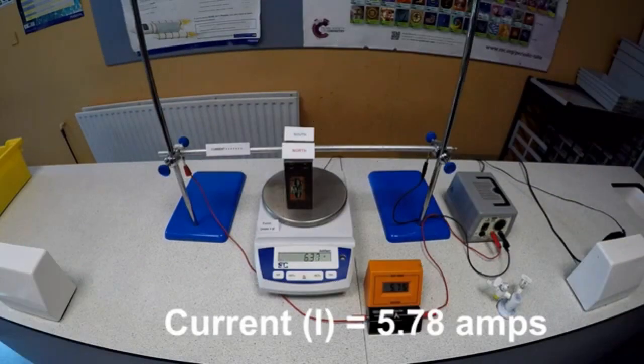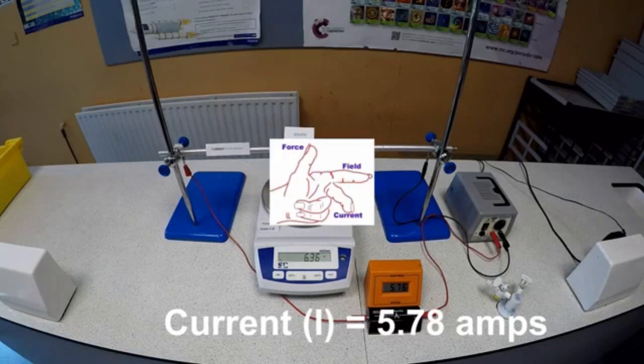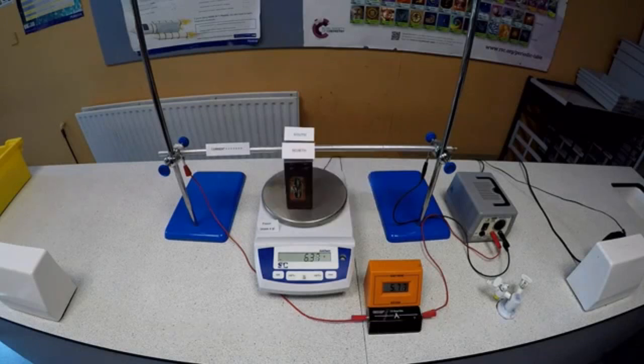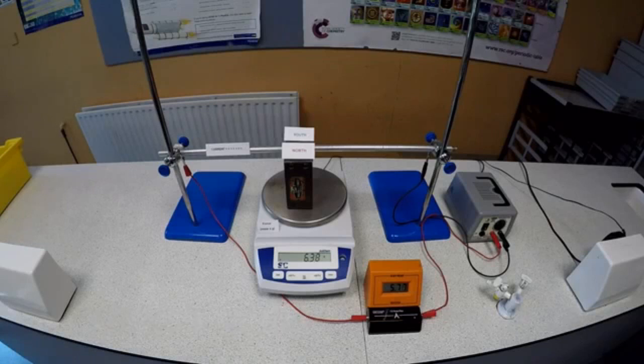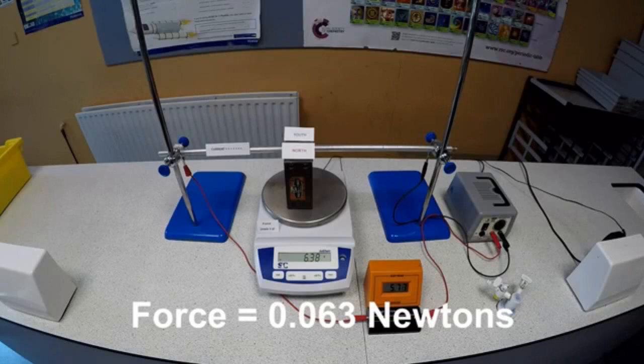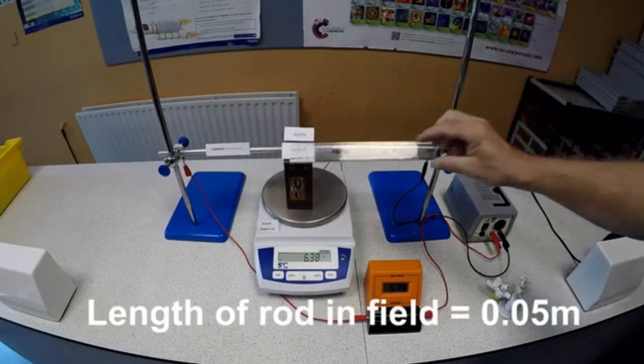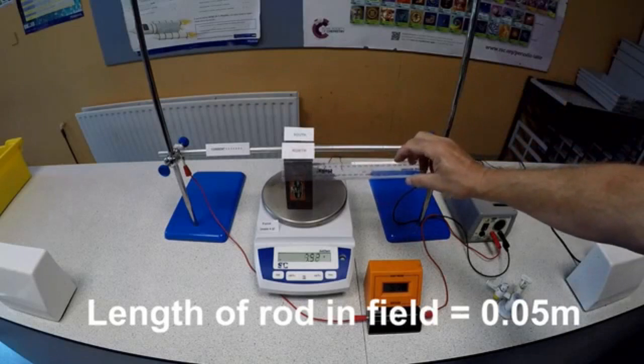The field is away from us, from north to south, and is lifting the bar up, using Fleming's left hand rule. The bar is heavy and doesn't lift. So using Newton's third law, action and reaction are equal and opposite, the magnet is pushed down. Reading the mass off the balance, and multiplying by G, you can find the force being applied.